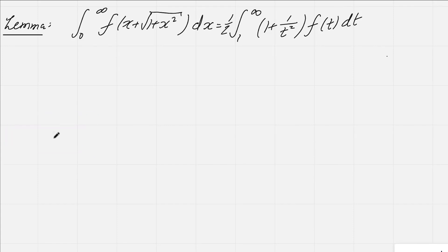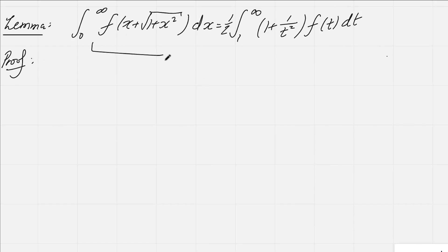Part one of the problem is to prove this lemma, which says that if we take a function f for which these two integrals exist, then the integral from 0 to infinity of f(x + √(1+x²)) dx is equal to a half times the integral from 1 to infinity of (1 + 1/t²) × f(t) dt. The first obvious step is, because f is such an arbitrary function, we need to do a substitution: t = x + √(1+x²).